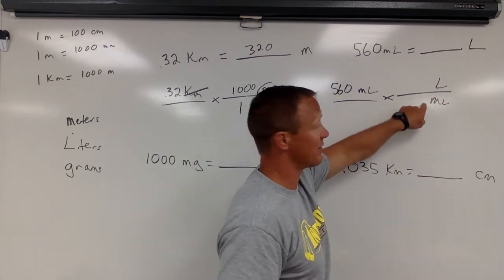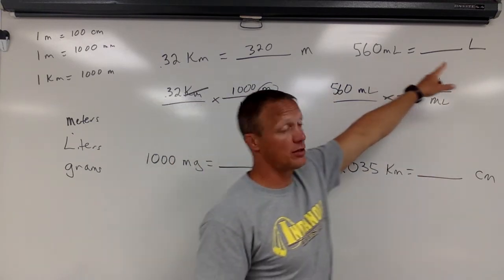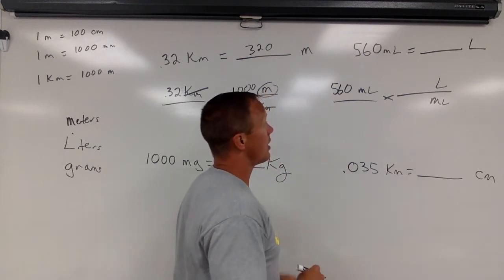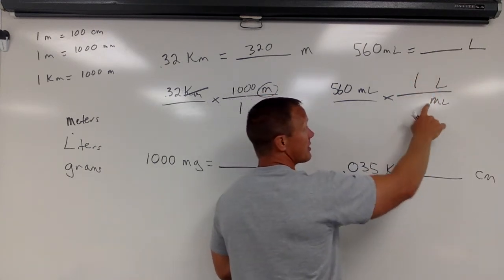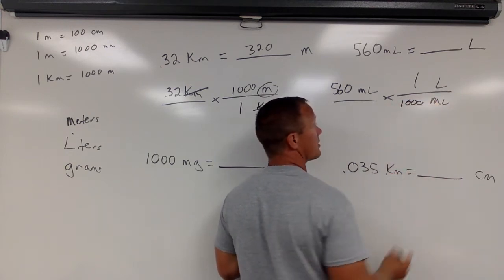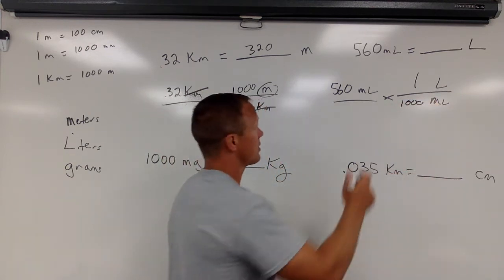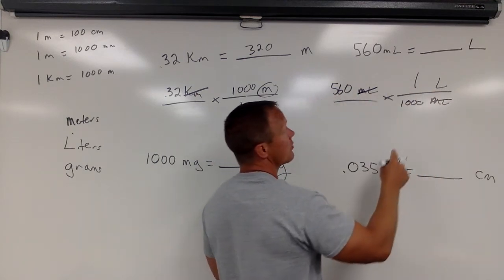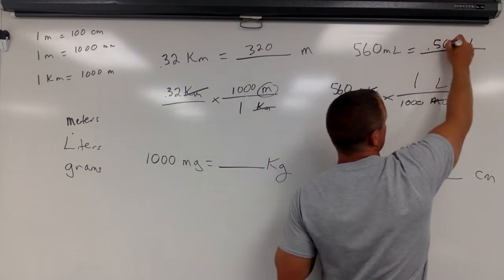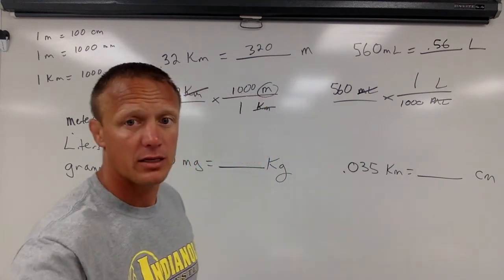One of these I always have as the base unit. In this case, we're going to the base unit of liters. A liter is bigger than a milliliter. So you say that one liter contains... milli means 1,000... it contains 1,000 milliliters. Cancels. Cancels. So we're taking 560 times 1 divided by 1,000, which is going to be 0.56 liters.